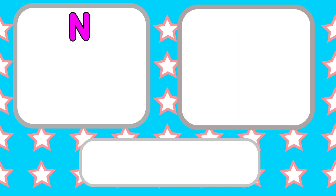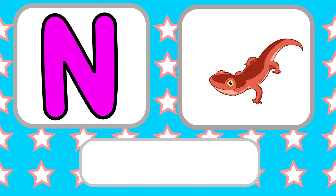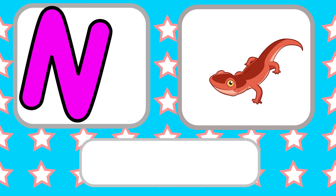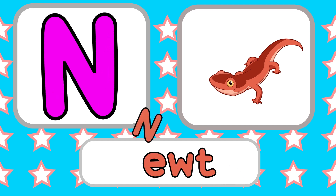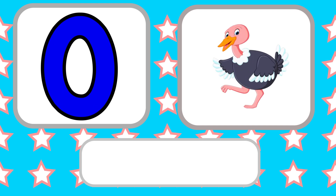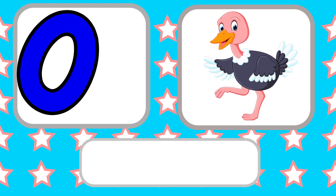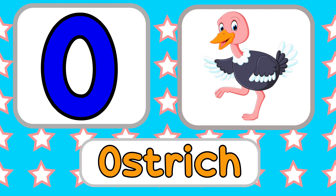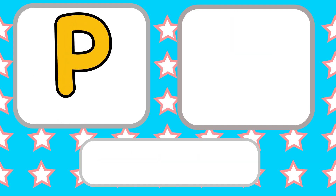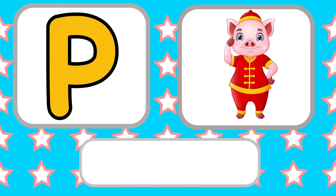M, Mouse. N is for Newt. N, N, N, N. O is for Ostrich. O, Ostrich. O, Ostrich. O, Ostrich. P is for Pig. P, P, Pig. P, P, P, Pig.